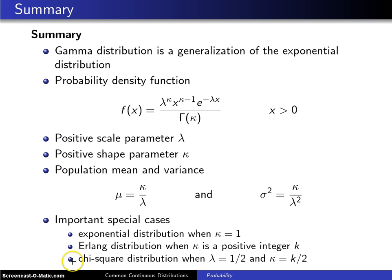Finally, the gamma distribution collapses to the chi-squared distribution when λ = 1/2 and κ = k/2, where k is an integer known as the degrees of freedom.